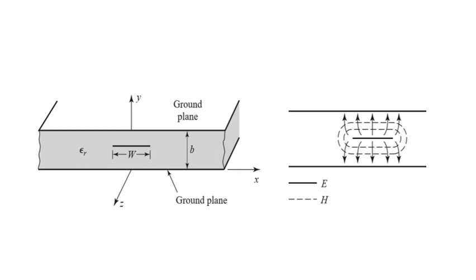Here we have a strip being sandwiched between two ground planes separated by a distance b. The advantage of this strip line component is that it always supports TEM propagation, though it is also observed that it supports higher order modes. You can see the electric field arrows moving from the strip outward toward the ground plane — this is called a radiating strip, radiating the electric field outside.